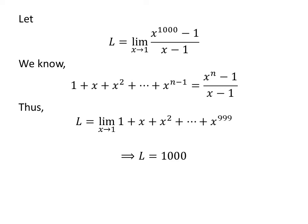As 1 plus x plus square of x plus so on up to x raised to the power of 999 is a continuous function at point 1, we can plug in 1 for x. This leads us to L is equal to 1000.